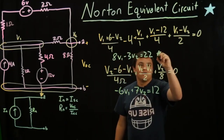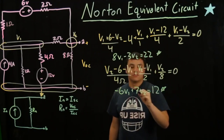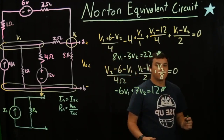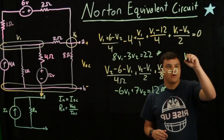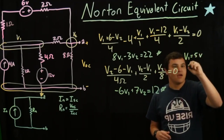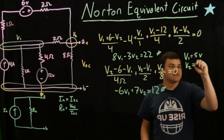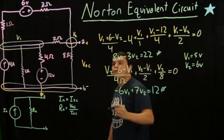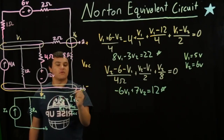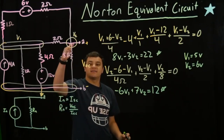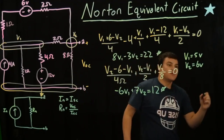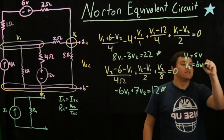Now we have two equations and two unknowns, V1 and V2. Using a system of equations to solve, we get V1 equals 5 volts and V2 equals 6 volts. We know that V2 is the voltage from this node to the reference node — it's also the same as our open circuit voltage from A to B. So VOC is equal to 6 volts.